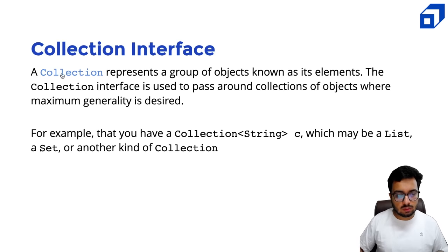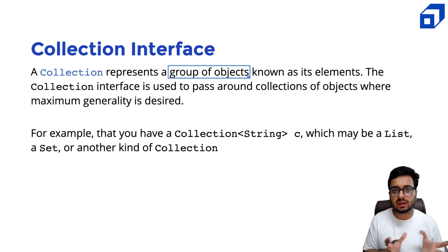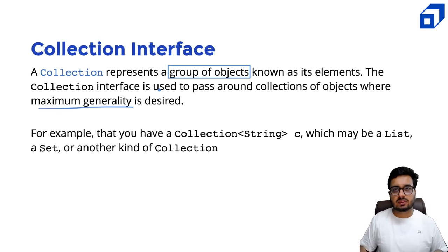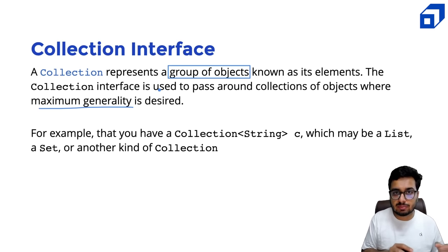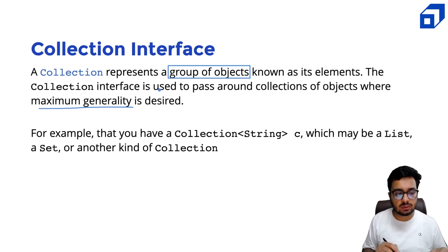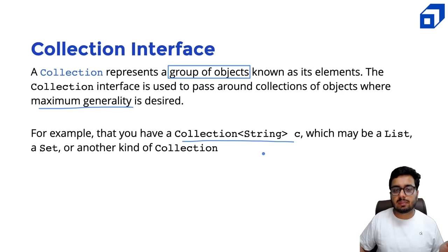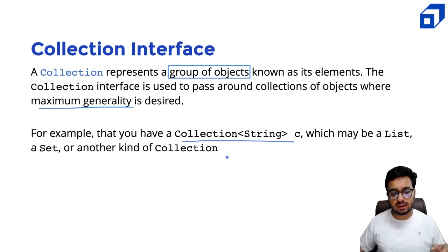Let me tell you a little more about the Collection interface. The Collection interface is a general interface representing a group of objects known as elements. It is used to pass around collections of objects where maximum generality is required. You just want a group of objects and general methods: add into the collection, remove from the collection, delete from the collection. For example, you have a collection of strings — it might be implemented using a LinkedList, a Set, or an ArrayList.